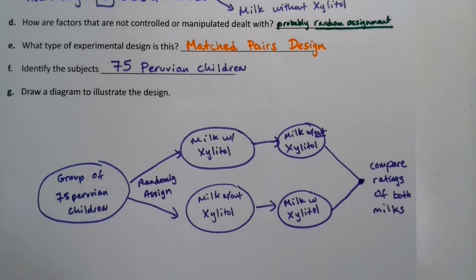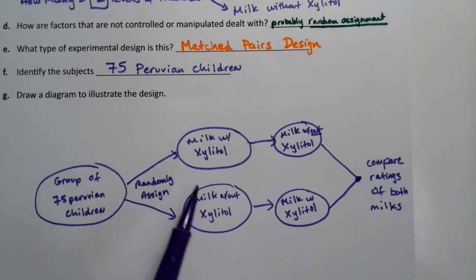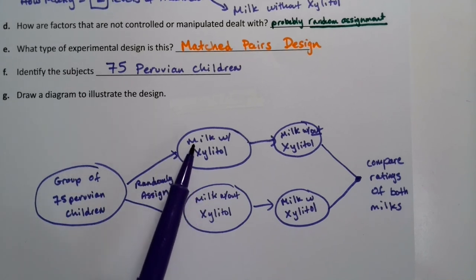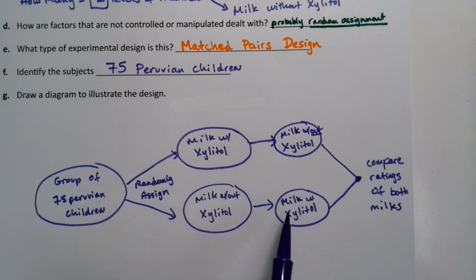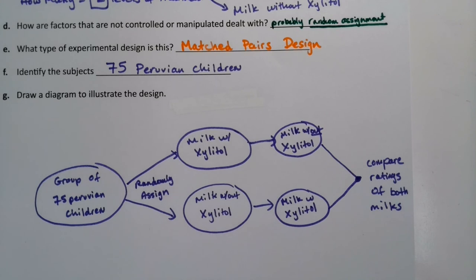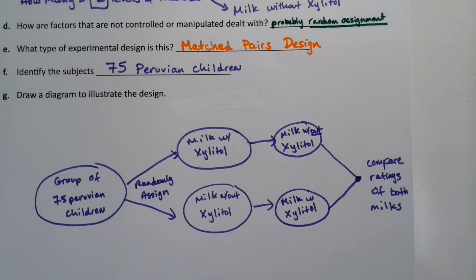What's happening is that when you separate the group, you're splitting into two subgroups: either they take it with xylitol first or without xylitol first, and then their second drink would be the opposite. Then they compare their ratings. The reason you don't have all the kids take it with xylitol first is that it might be biased in some way. By randomly assigning the order, you're eliminating that bias of taste or flavor on your tongue.